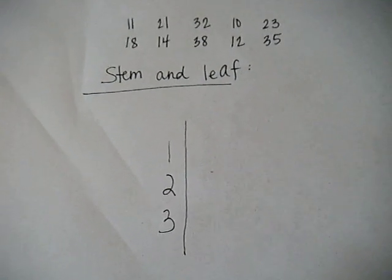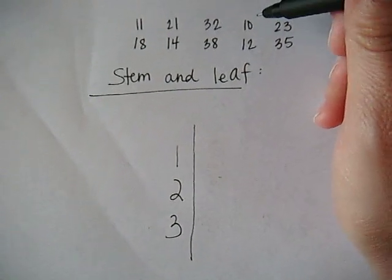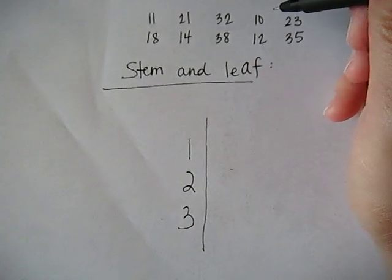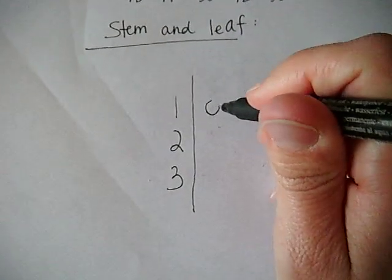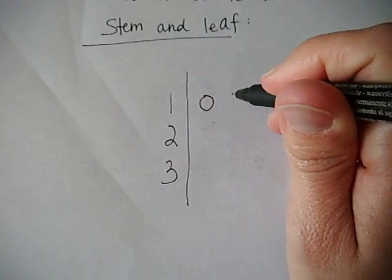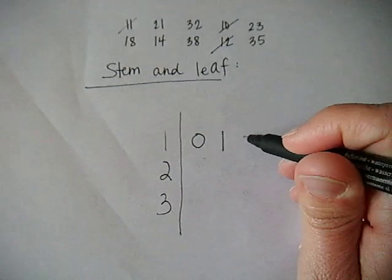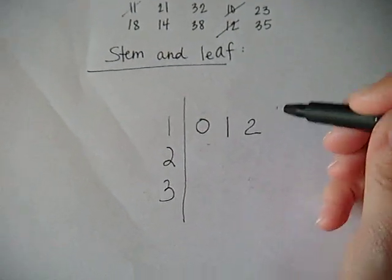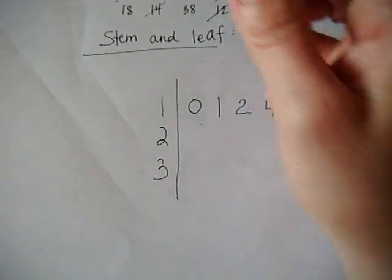Now with the leaves I generally just try to mark them off as I go so I can get them in order. So on that one stem we're going to need to have the numbers 10, so I'll put a 0 down for the leaf. 11, 12, 14, and 18.